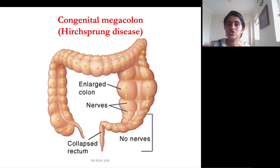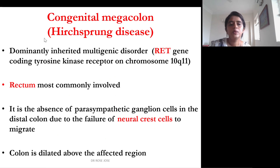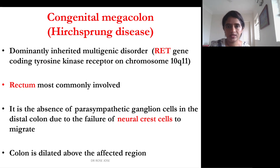Congenital megacolon, or Hirschsprung disease, involves absence of parasympathetic ganglion cells in the distal colon due to failure of neural crest cells to migrate into that region. The affected bowel does not dilate, but the colon above it becomes dilated. It is a dominantly inherited multigenic disorder; the affected gene is the RET gene, coding for tyrosine kinase receptor, located on chromosome 10q11. The rectum is the most commonly involved region.